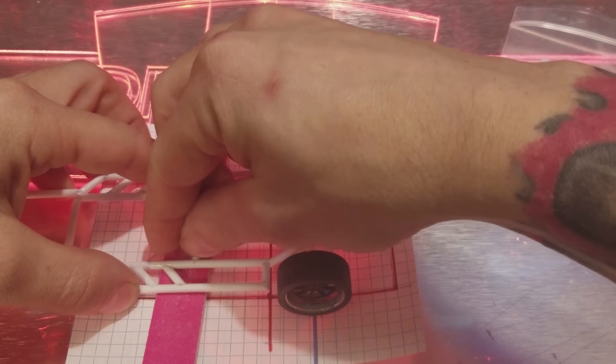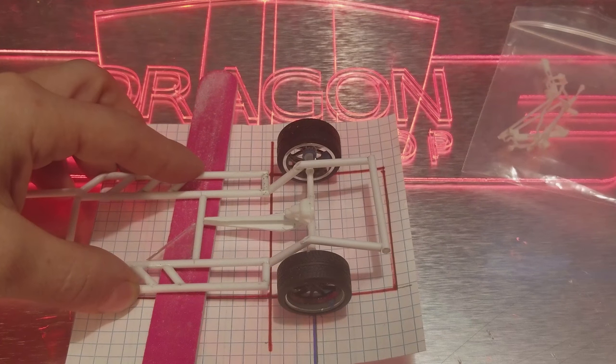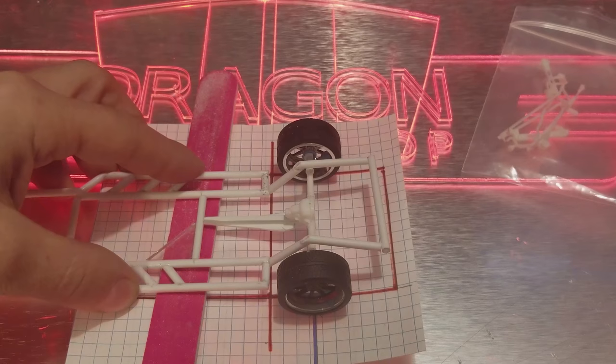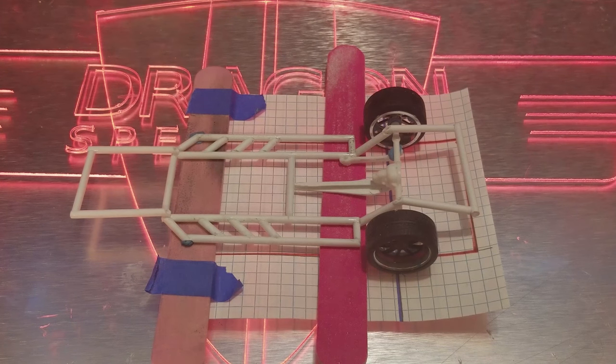So we will make sure that we are centered up on that. Grab our little squares, make sure we're square against that. And then I will get this glued in and we'll start working on some of the other components for this.